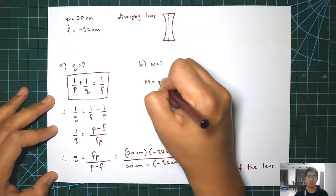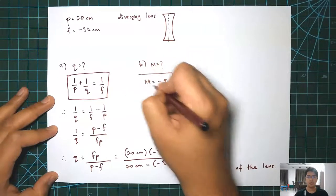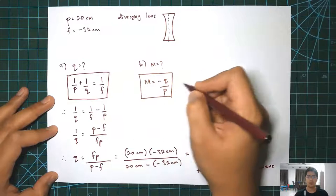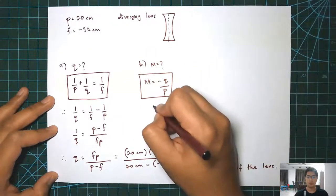Question B, the magnification. This is the magnification equation: M equals to negative Q over P. You need to remember this equation as well.